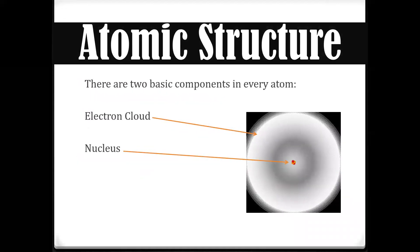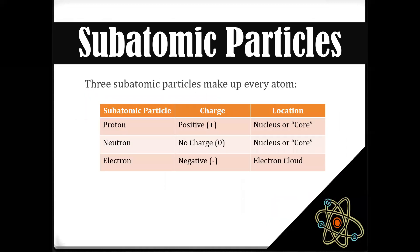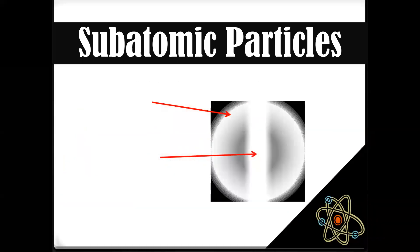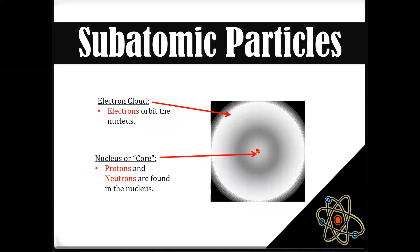This is the basic atomic structure, which includes the electron cloud and the nucleus. The subatomic particles present in an atom are: protons, which are positively charged; neutrons, which have zero charge; and electrons, which are negatively charged. Electrons orbit the nucleus in the electron cloud, whereas the nucleus — the core of an atom — comprises protons and neutrons.